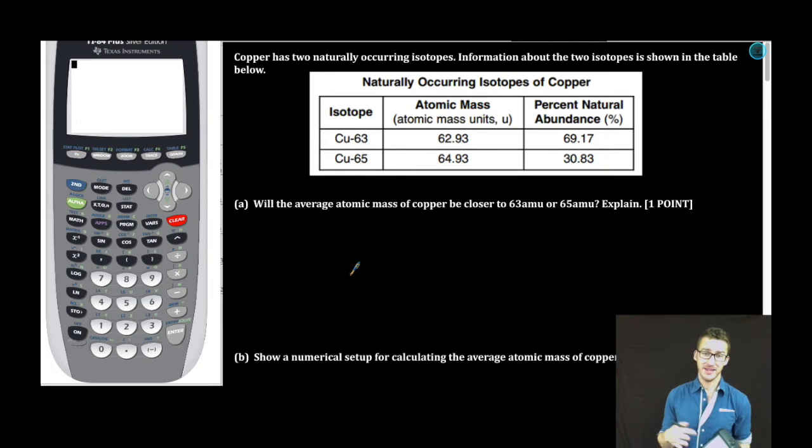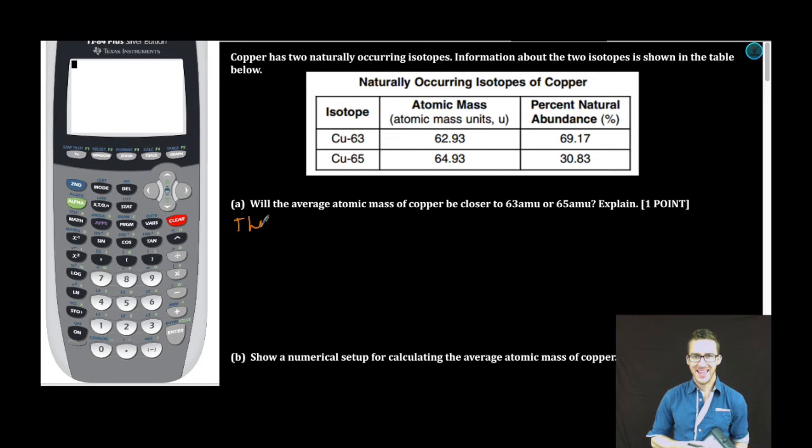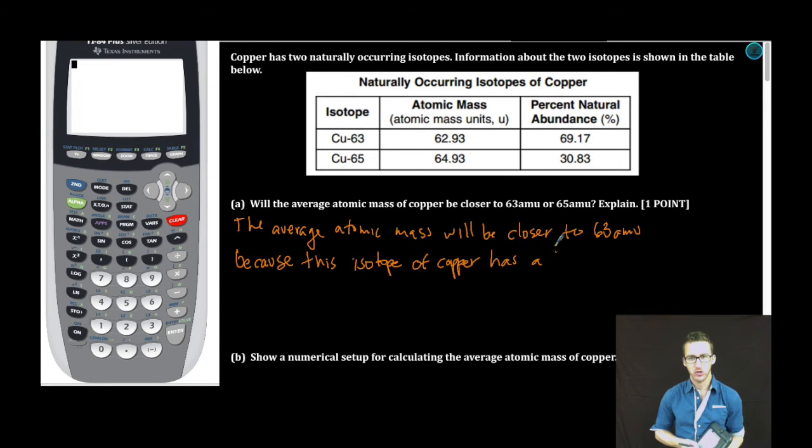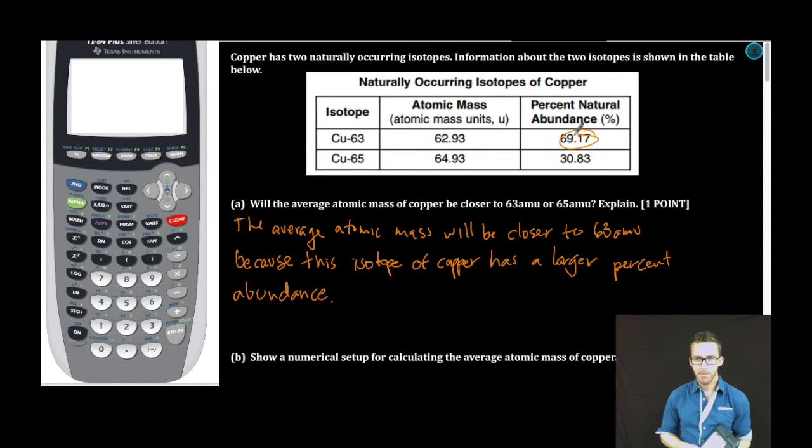So this part is really, do you understand the idea of weighted averages? Our answer: the average atomic mass will be closer to 63 AMU because this isotope of copper has a larger percent abundance. 69.17% to 30.83%. And as you recall weighted averages, the average will be closer to that species, or isotope in this case, with the larger abundance. One point done.